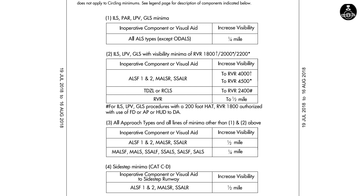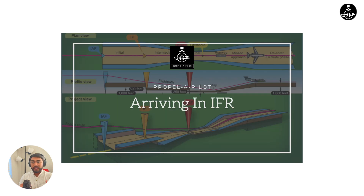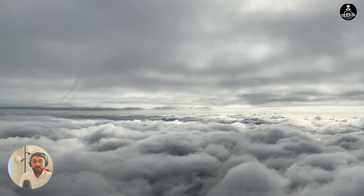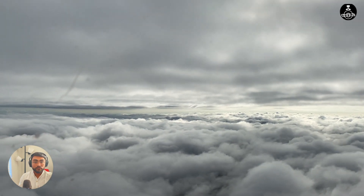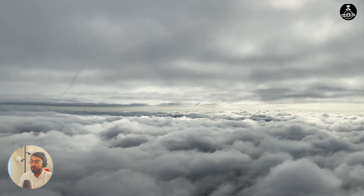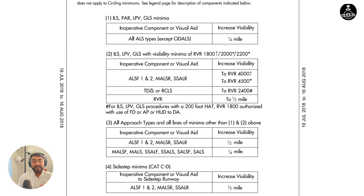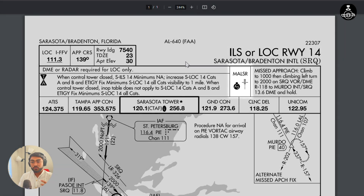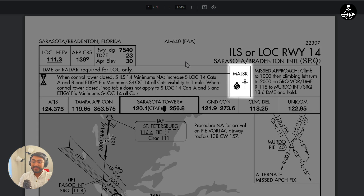The inoperative components table. Welcome to the video. This is a video that I am updating in one of my courses, 'Arriving in IFR,' and I thought I would put it up on YouTube as well. The inoperative components table — what would happen to the minimums of an approach when the approach light systems or any of the visual aids go inoperative? This table is used in addition to the FAA approach charts whenever any of the components or visual aids associated with an instrument approach is inoperative.